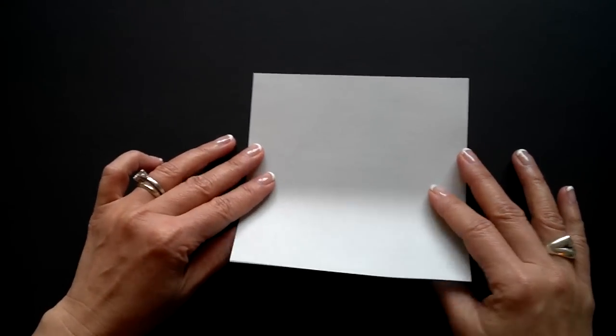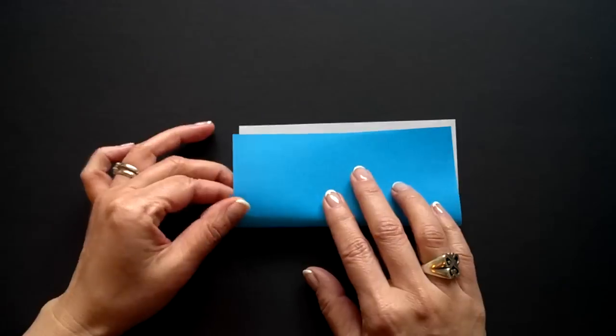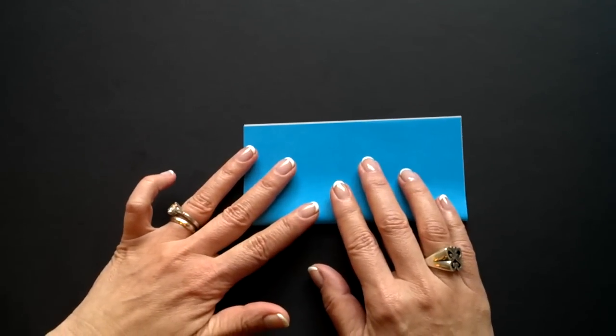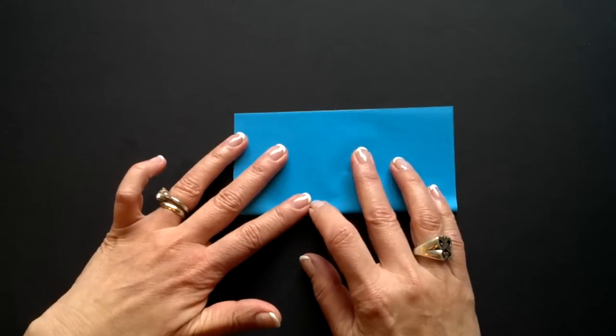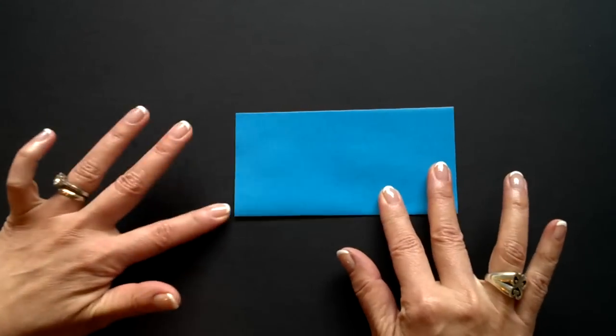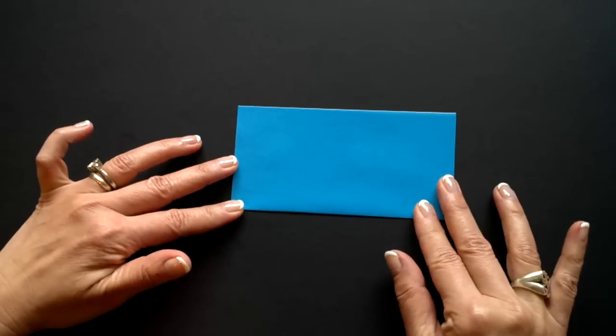We're going to fold this square in half, like so. The first step is the most important, making sure that your corners all meet exactly, and I see no white showing.